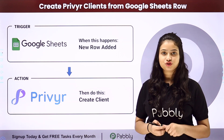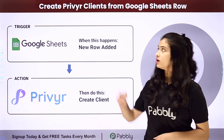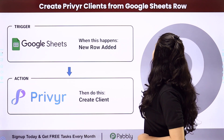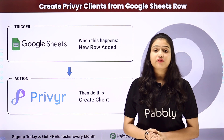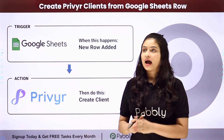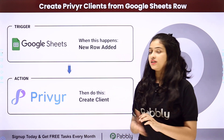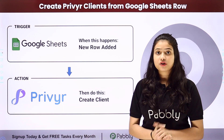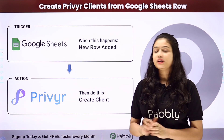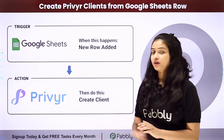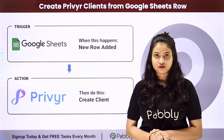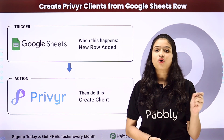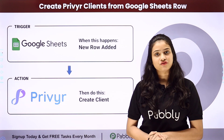Hello everyone. In this video we are going to learn how to create Previer clients from Google Sheets rows. I want that whenever a new row is added in my Google Sheets along with the data, automatically by using the same response, a new client should be added in my Previer account, which is an amazing CRM software. So how are we going to do this process automatically and effortlessly?